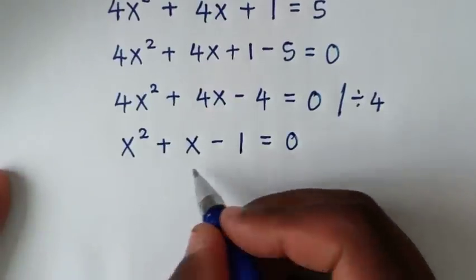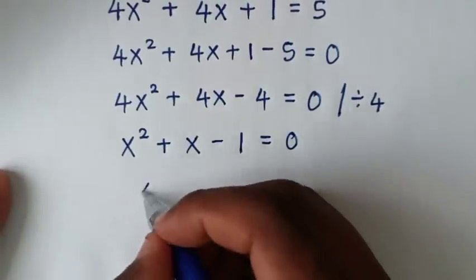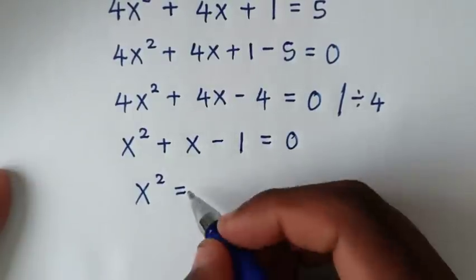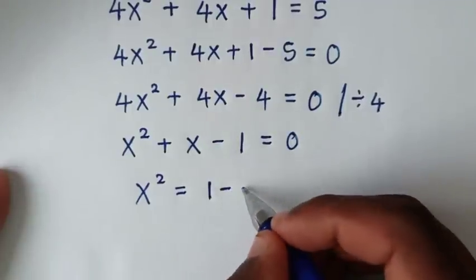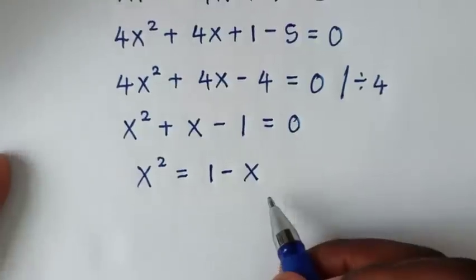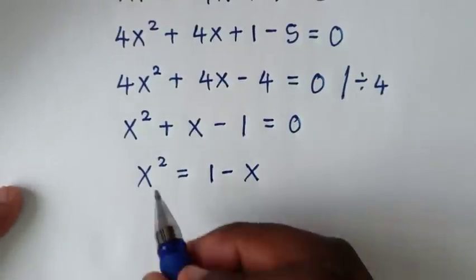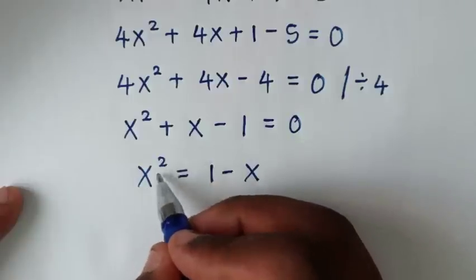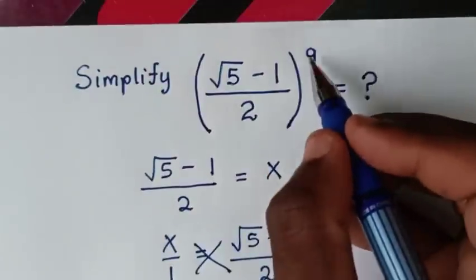Rearranging, we take x minus 1 to the other side: x² equals 1 minus x. This key relation, x² = 1 minus x, will be used repeatedly as we build up x to the power of 9.